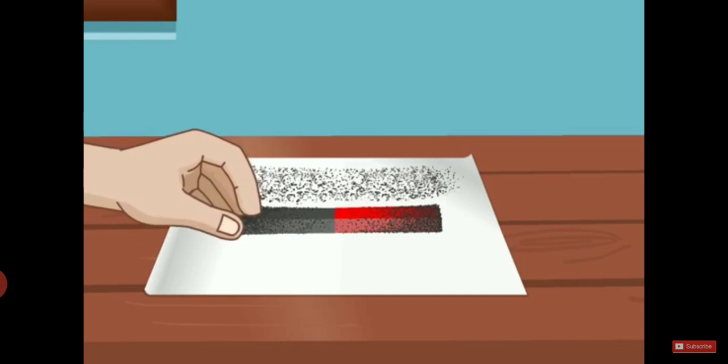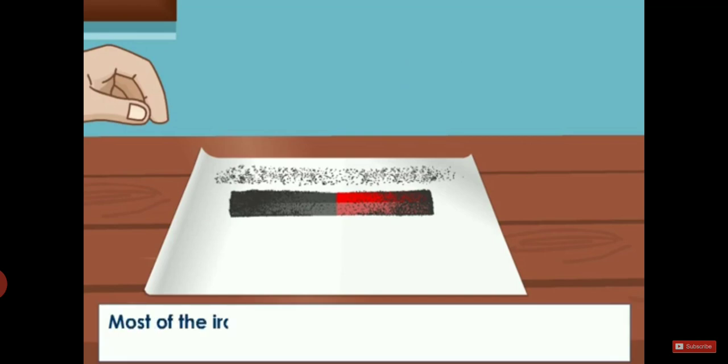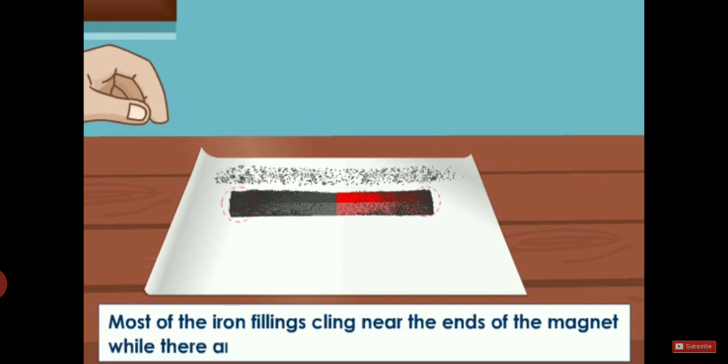We will see that the magnet attracts iron filings at the two ends of it, and there are no iron filings in the center of the magnet, as the magnetic force is present at the two ends of the magnet. All right, let's see.